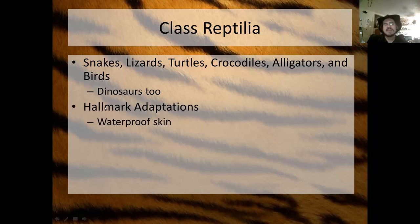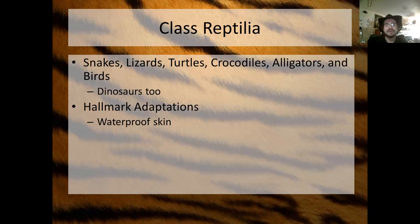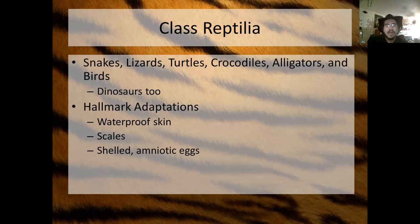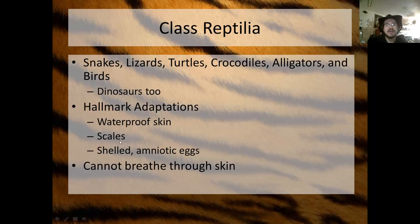The hallmark adaptations of class Reptilia are waterproof skin — these animals will not dry out if left out of water. They won't lose water through their skin like an amphibian will. They have hard protective scales on their body and shelled amniotic eggs. Because of these scales and the thickness of their skin making it waterproof, they can no longer breathe through the skin, so reptiles have a much more developed pair of lungs than amphibians.